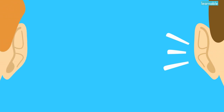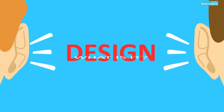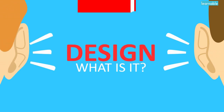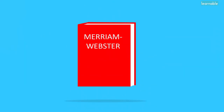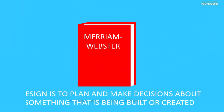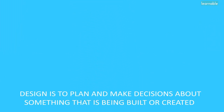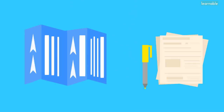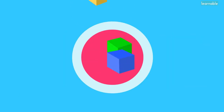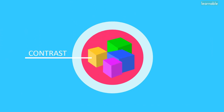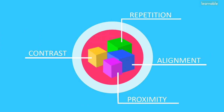We have all heard the word design before, but what exactly is it? According to Merriam-Webster's dictionary, design is to plan and make decisions about something that is being built or created. But design is so much more than the blueprints and projection sheets. Design is a mixture of many elements including the basic principles and building blocks like contrast, repetition, alignment, and proximity.